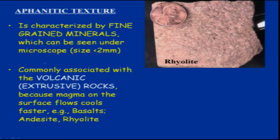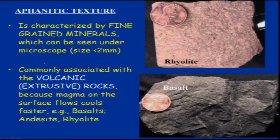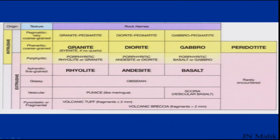Rhyolite is comparatively lighter in color, being rich in felsic minerals, whereas basalt is darker in color and richer in mafic minerals. Both basalt and rhyolite are fine-grained rocks.